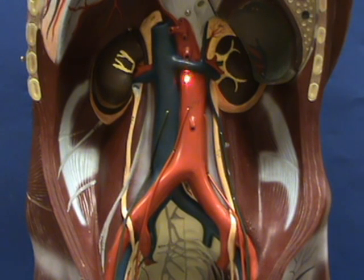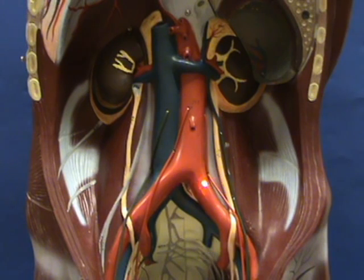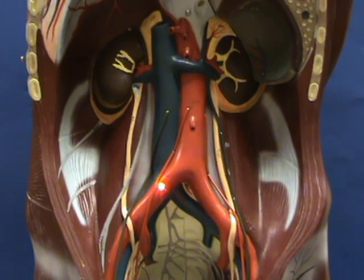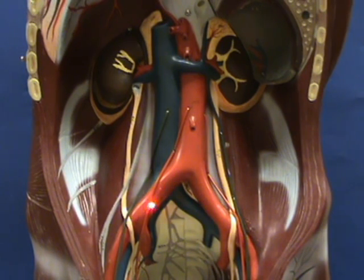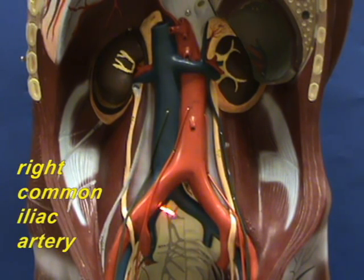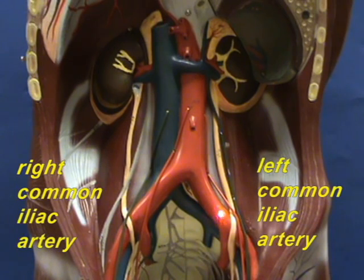As the abdominal aorta descends, it eventually bifurcates, or forks, and right over here at this point, we have the two common iliac arteries. This would be the right common iliac, and this would be the left common iliac.